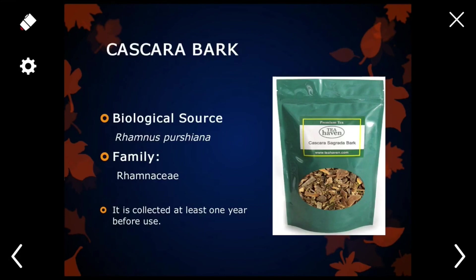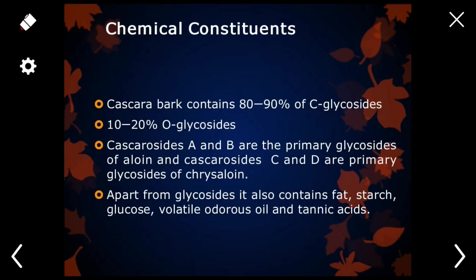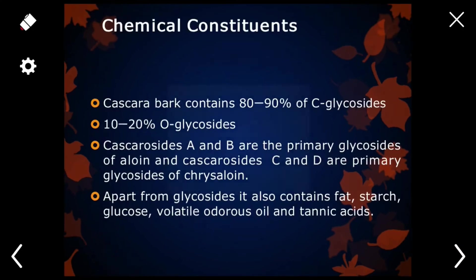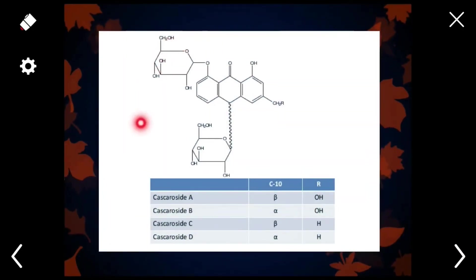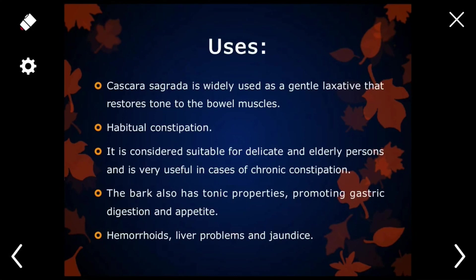Cascara. Biological source: Rhamnus purshiana; family Rhamnaceae. Chemical constituents: it contains cascaroside A and B, and cascaroside C and D. This is the basic structure of cascaroside, and if you replace the R group with specific functional groups you can obtain cascaroside A, B, C, and D. Cascaroside is a gentle laxative; it will restore the tone of the bowel muscles. It is used for habitual constipation and chronic constipation. It also improves appetite and is used for the treatment of hemorrhoids, liver problems, and jaundice.